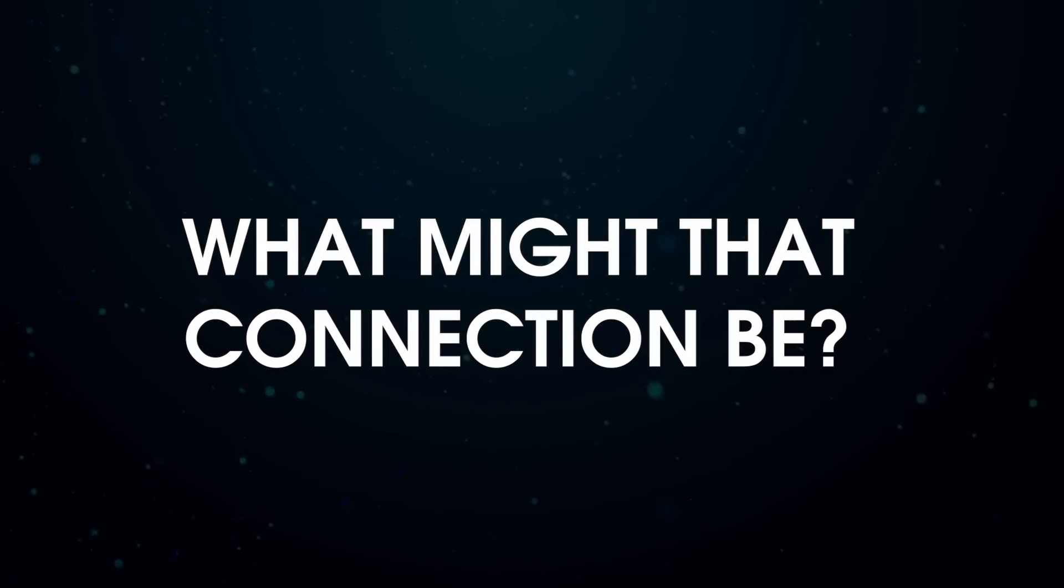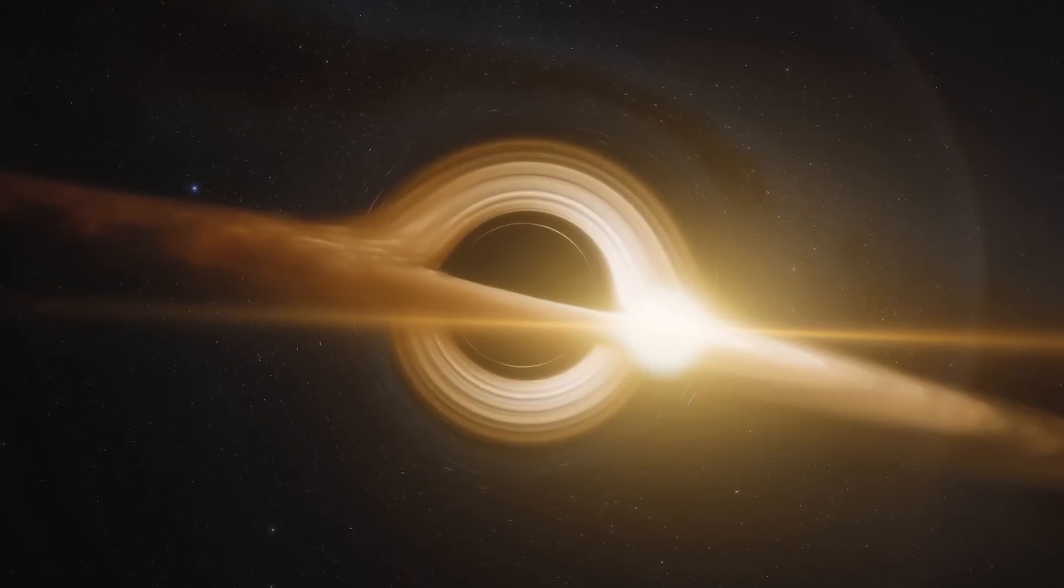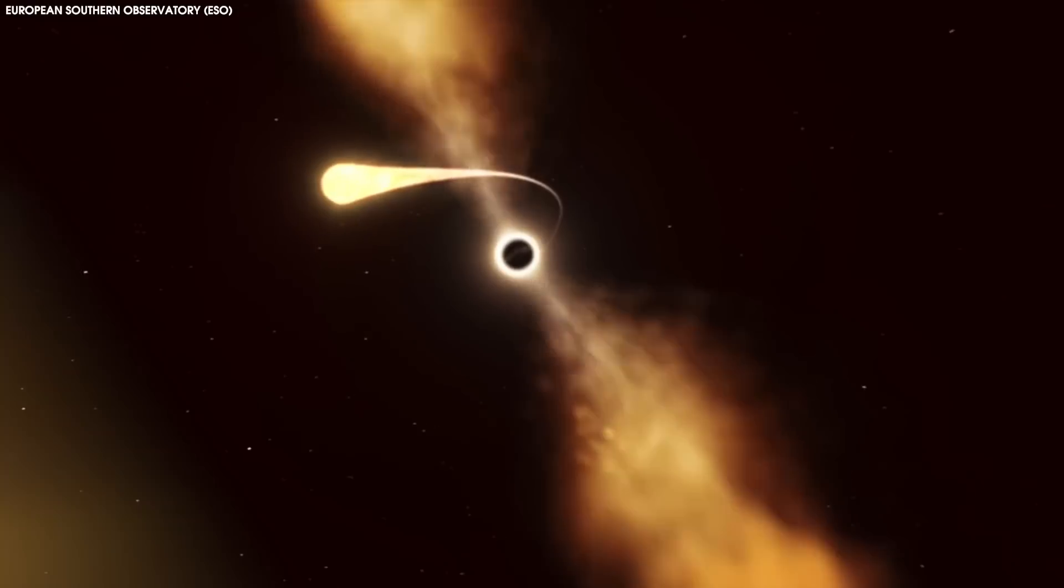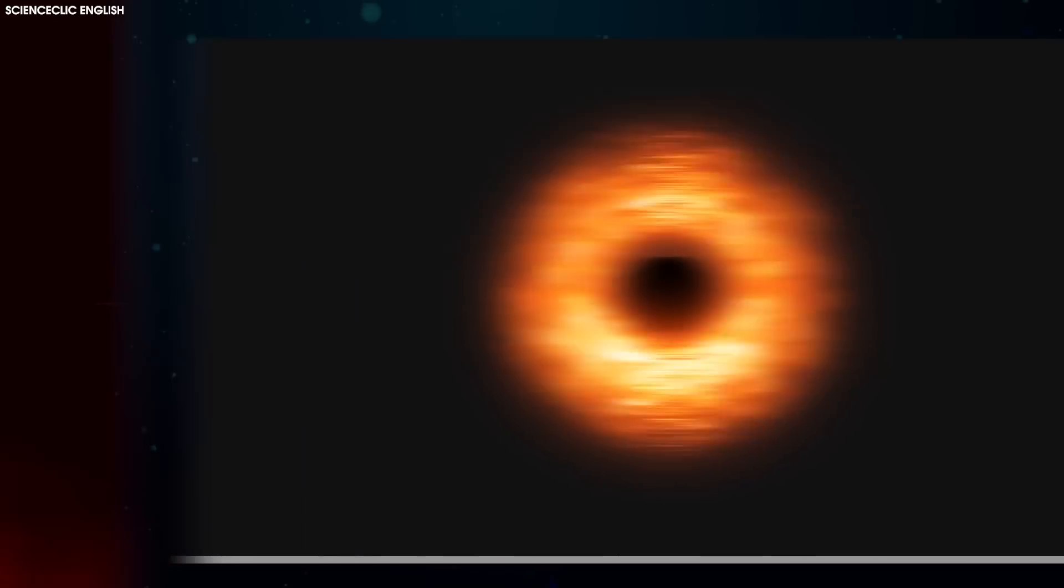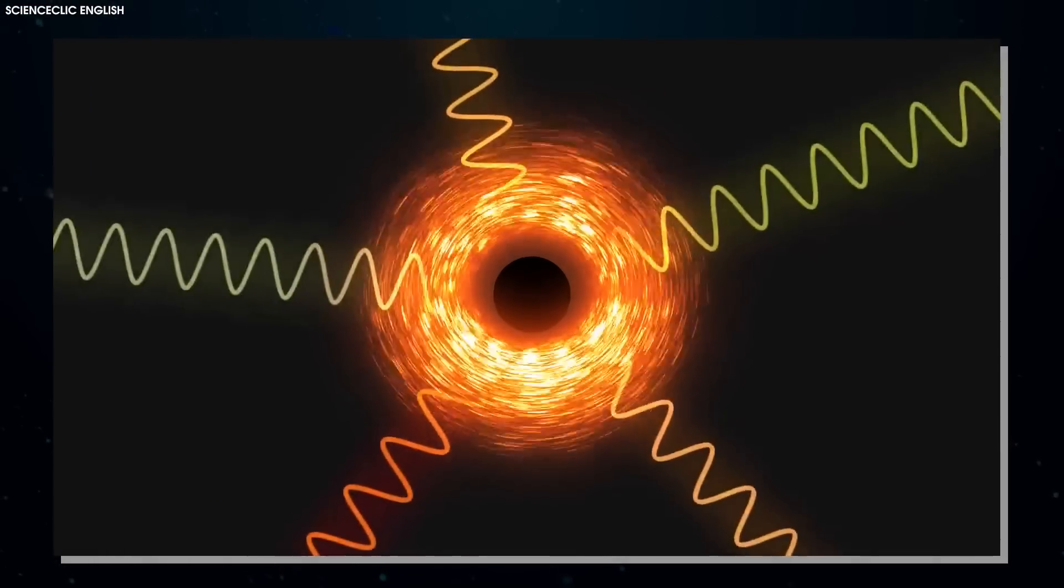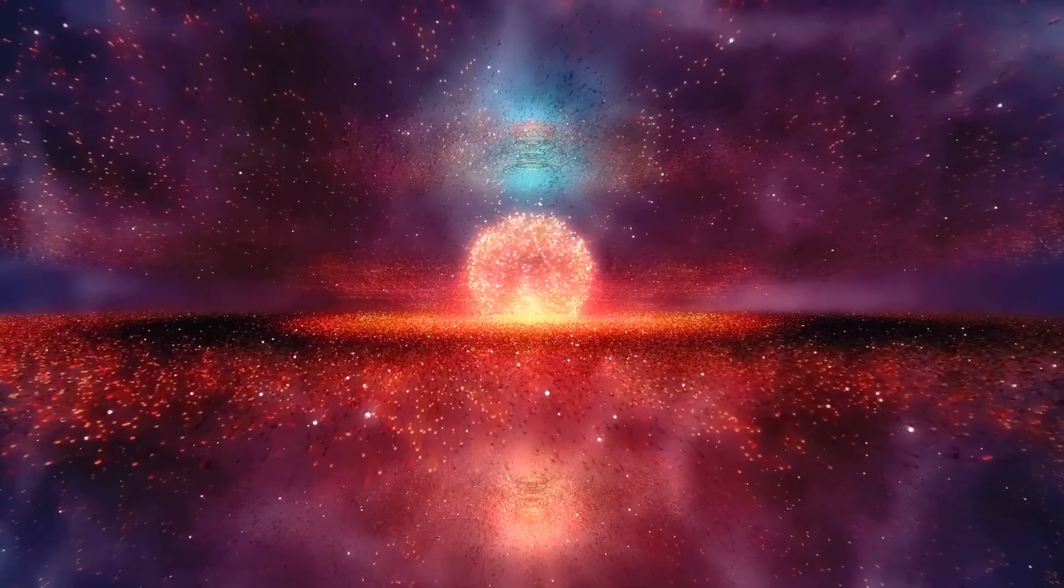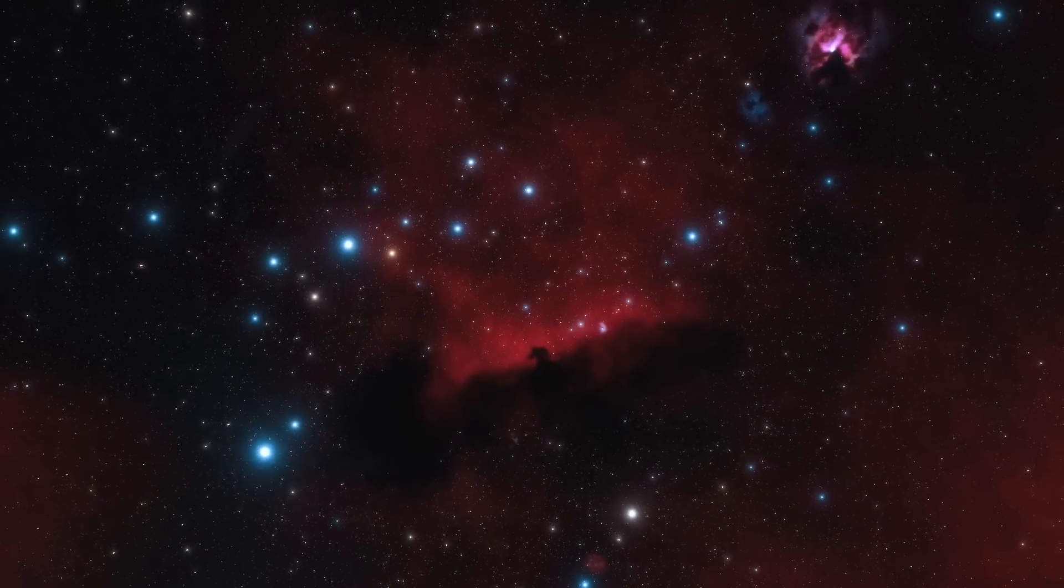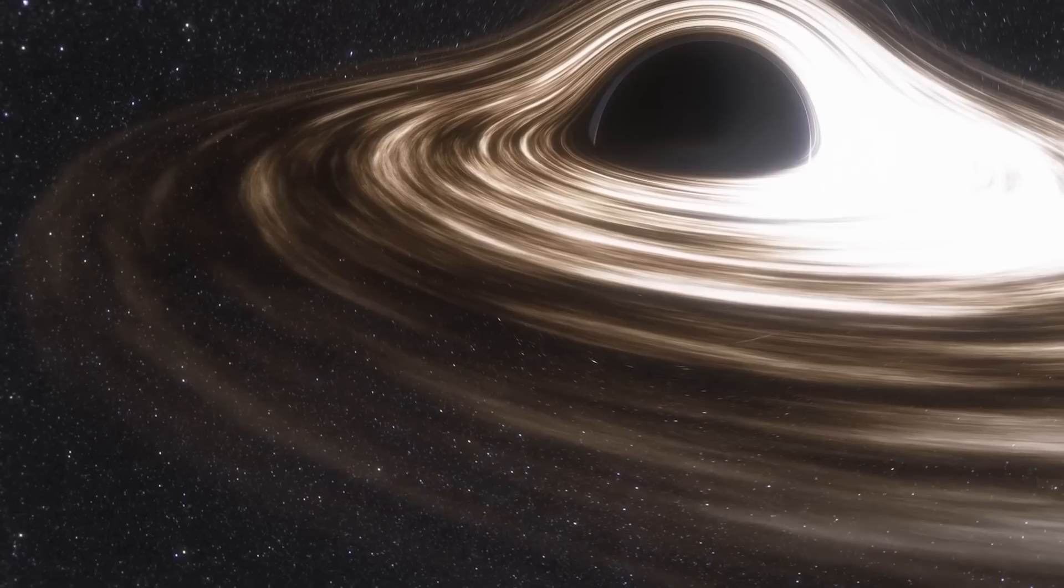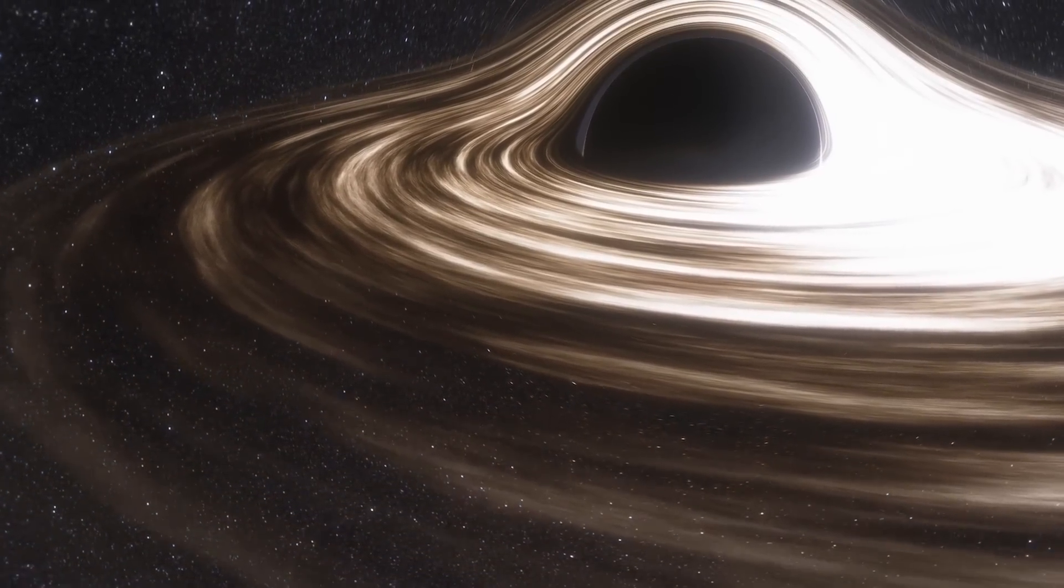What might that connection be? Once again, black holes could be the answer. Black holes gain mass as material falls into them and decay, losing mass via Hawking radiation. As the size of the event horizon changes, is it possible that this changes the energy inherent to the fabric of space to an observer located inside the event horizon?